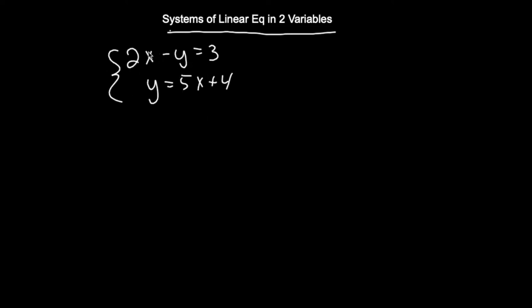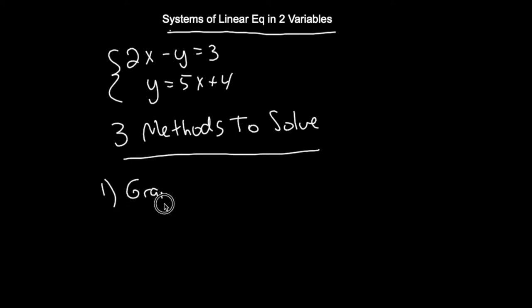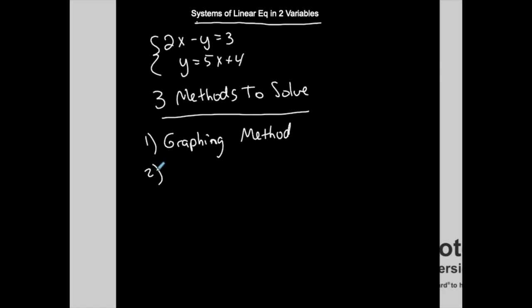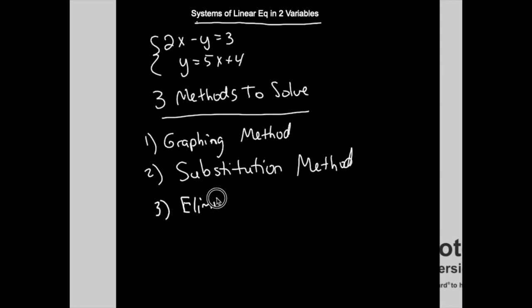This is an example of a system of two linear equations and two variables — two variables, two lines, and a system. There are three methods we can use to solve these. The first method is the graphing method. Graphing is best for visualizing what you're doing, but it's the worst method to use generally, because if your solution is a fraction it's very difficult to identify graphically. The two algebraic methods are called substitution and elimination.